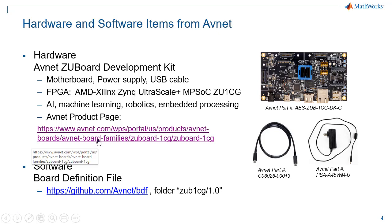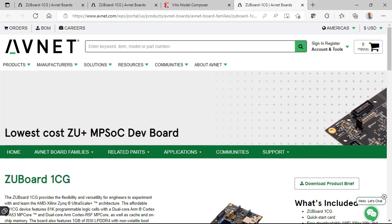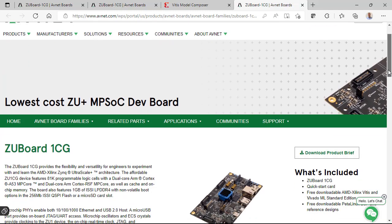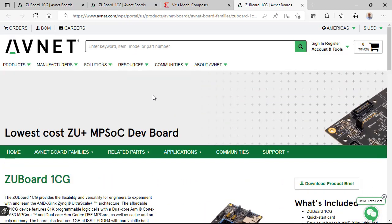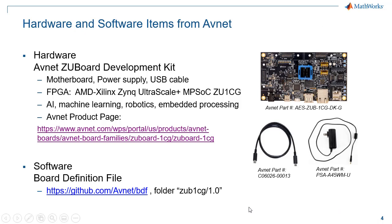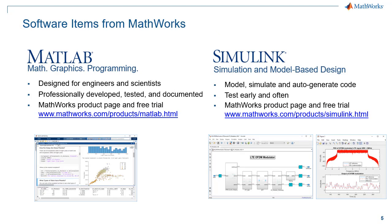If you want to learn more about the ZU board, you can go to the Avnet home page, where there's a description, purchasing information, and additional documentation. Next, you'll need software — you can go to GitHub and look for the board definition file for the ZU v1cg 1.0, as shown.